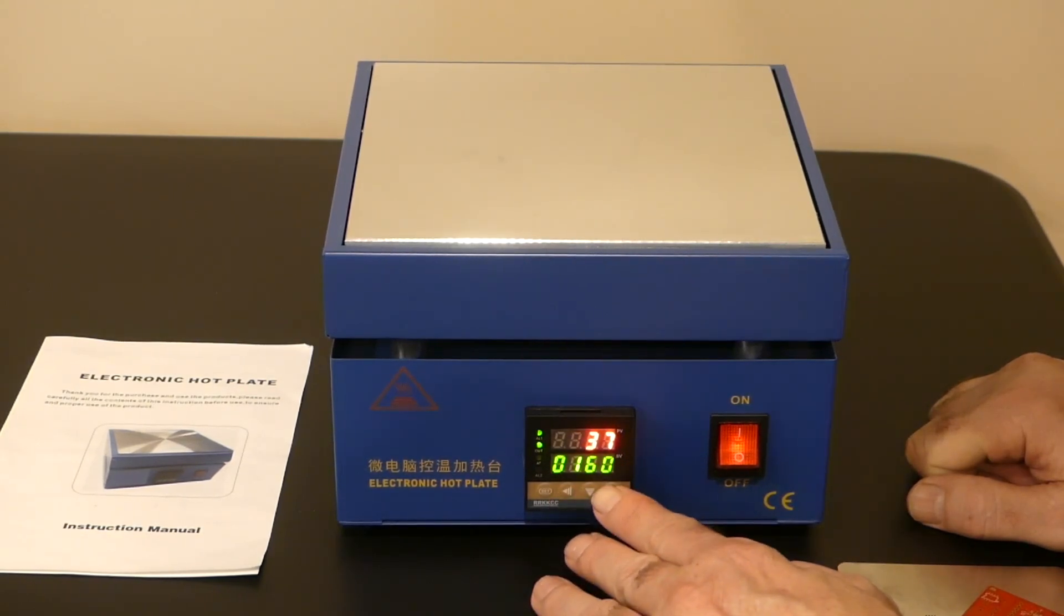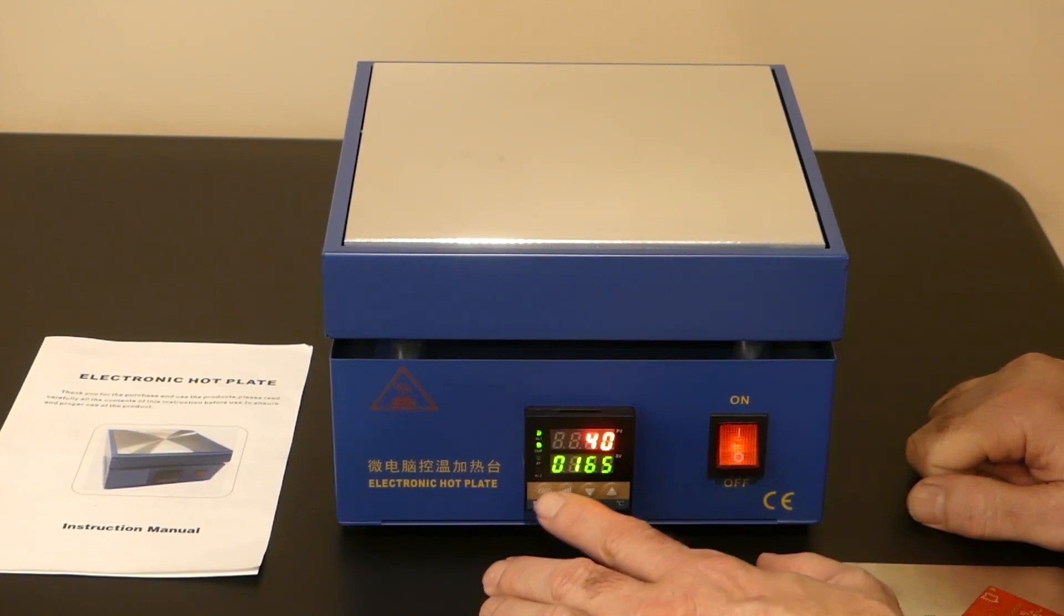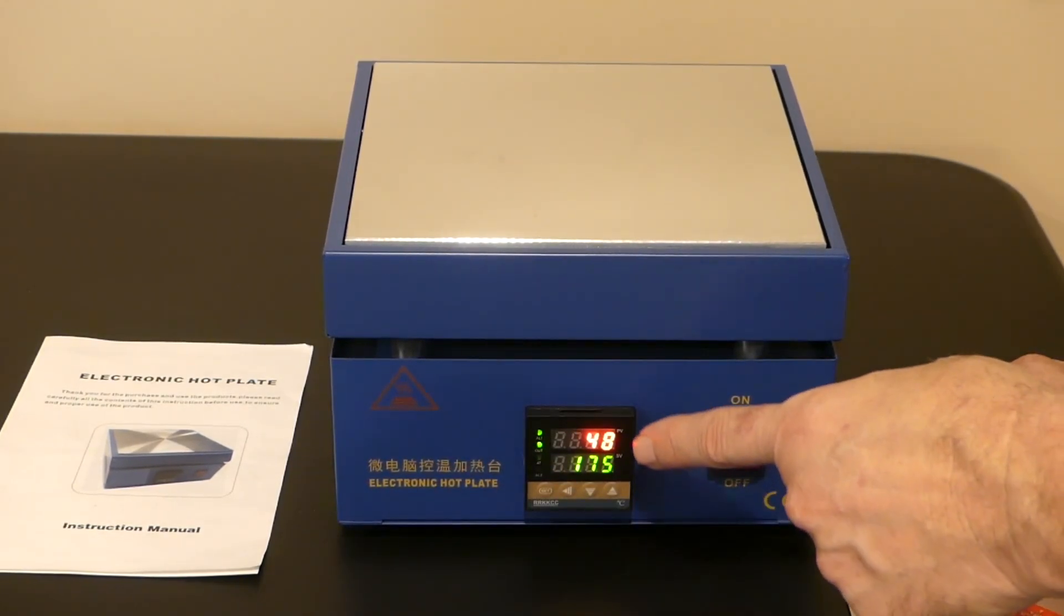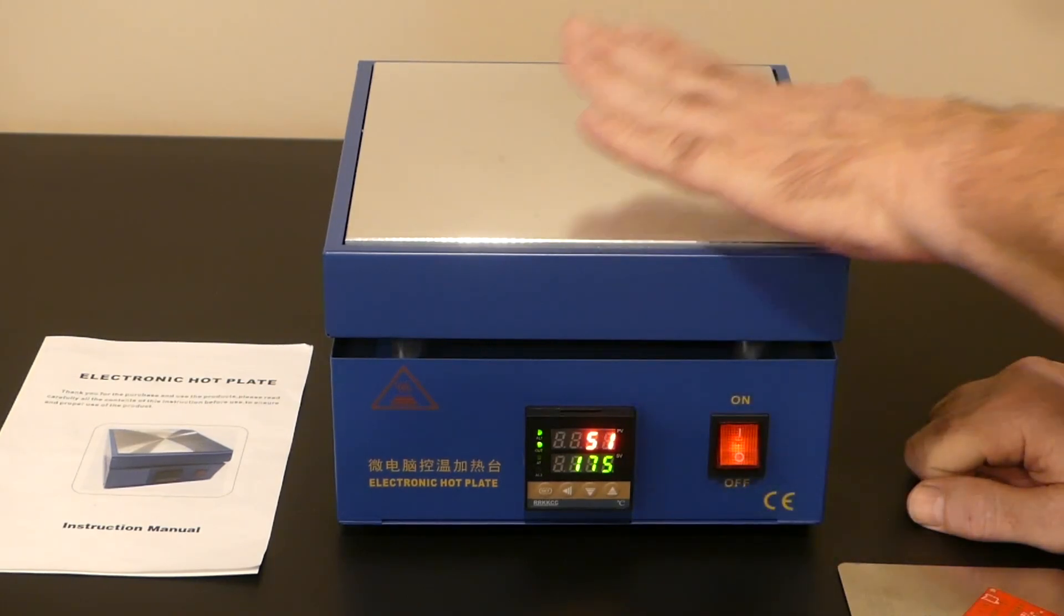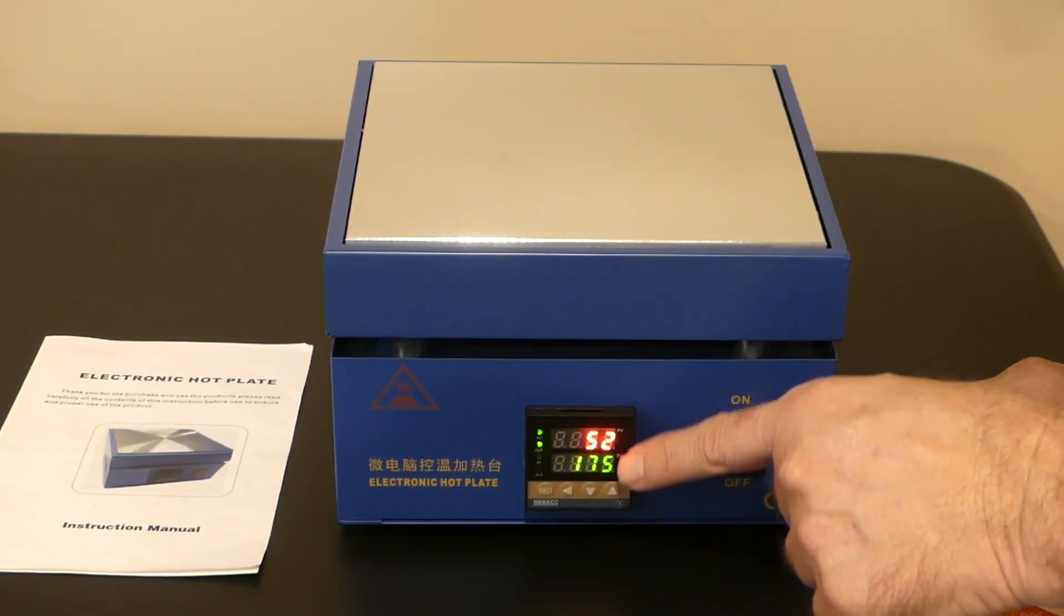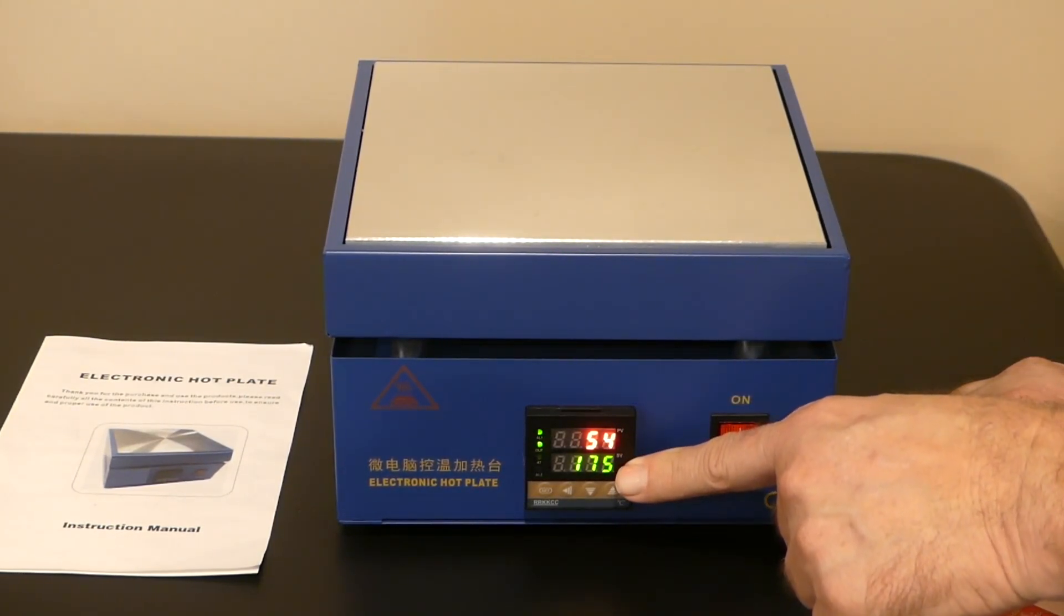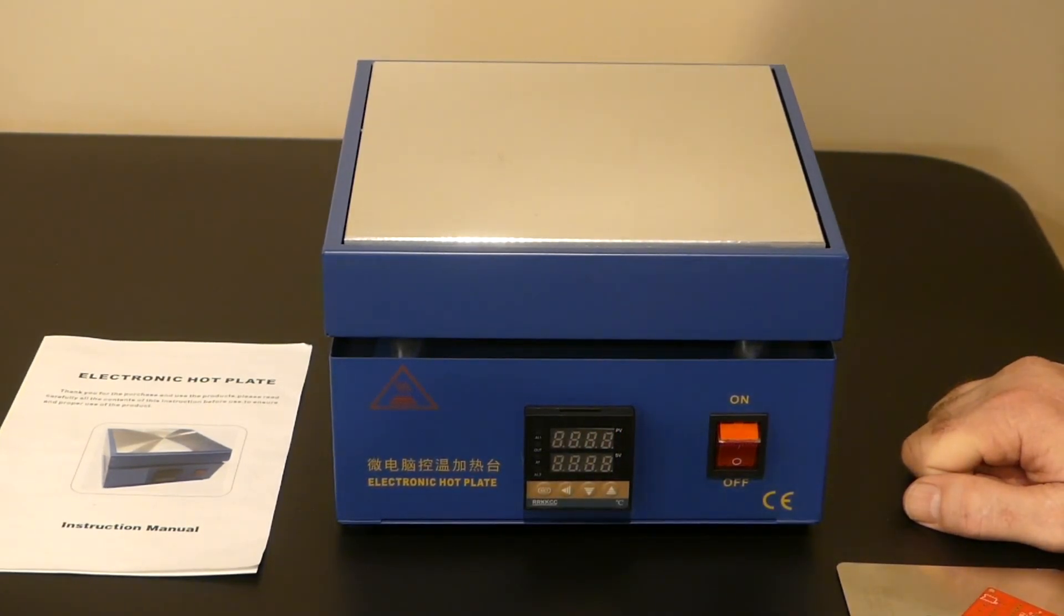So if I want to set that to 165, I can just arrow up. I want to do the next digit, I want to change that to 7, I can arrow up. Hit the set and it's done. And now this is going to show you what the current plate top temperature is, and it's going to hit 175 C. I'm going to turn that off, I don't want it getting hot.